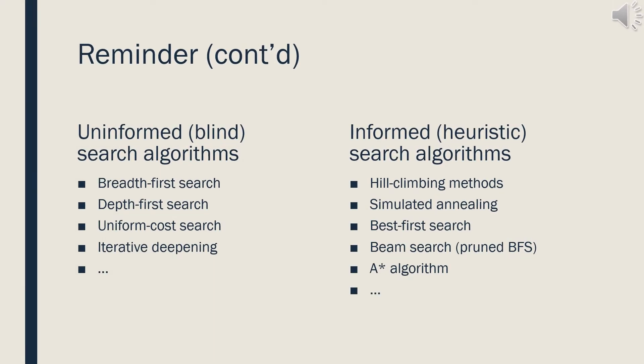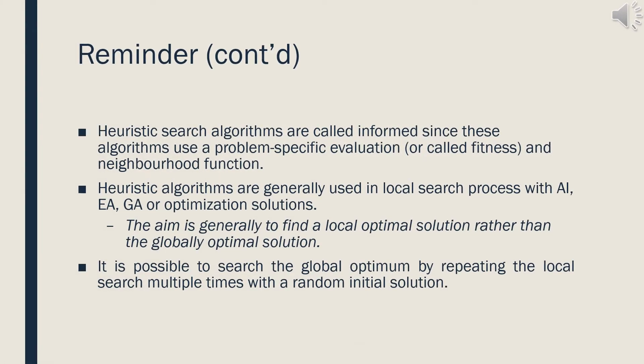Some well-known algorithms like breadth first, depth first, and uniform cost search are in blind search methods. Heuristic search algorithms include hill-climbing methods, simulated annealing, best first search, A* algorithm, and so on. Heuristic algorithms use a problem-specific evaluation and neighborhood function, that's why they are called informed.